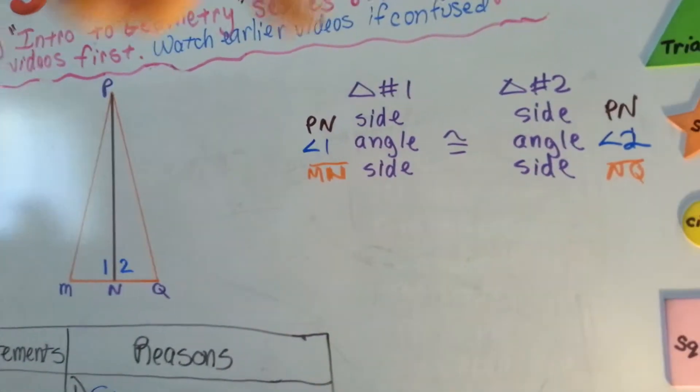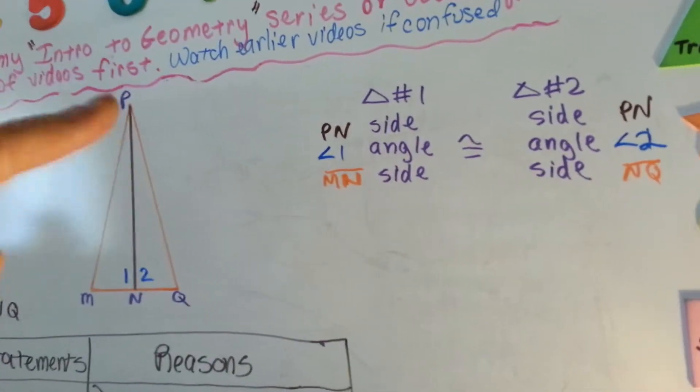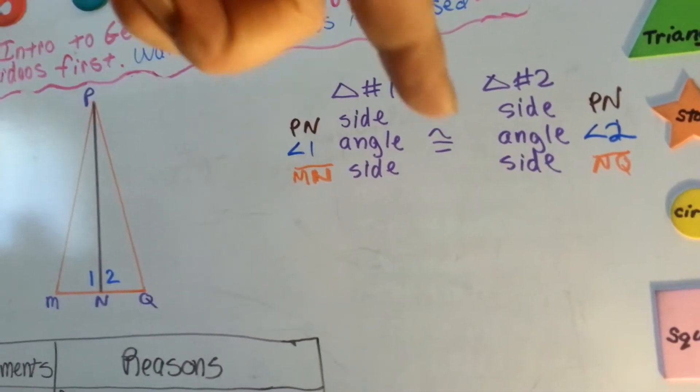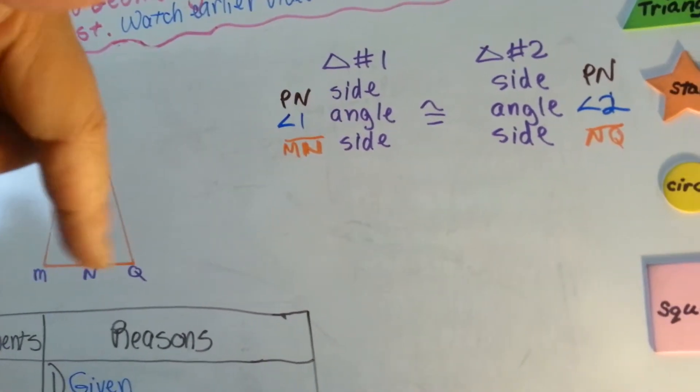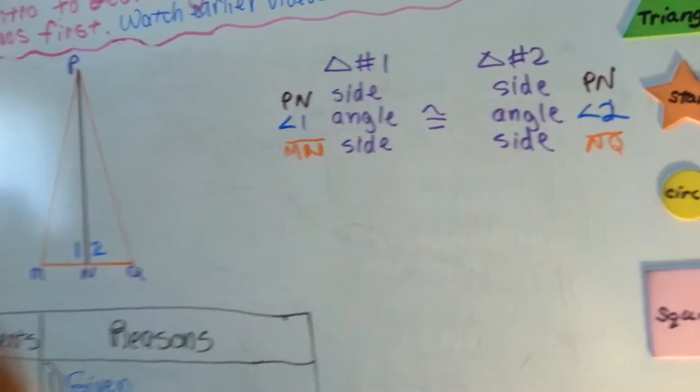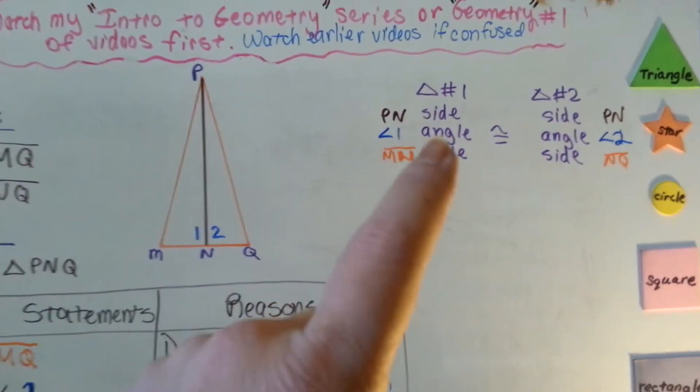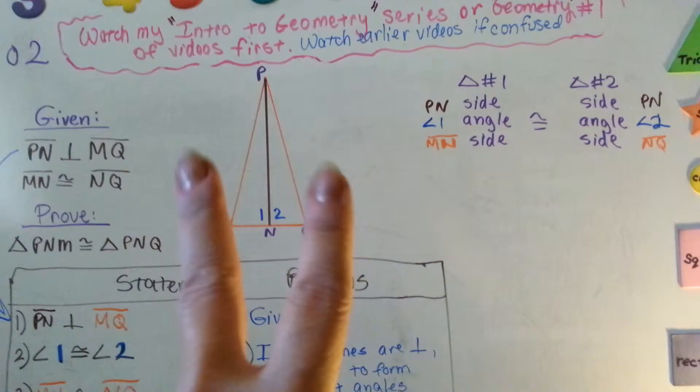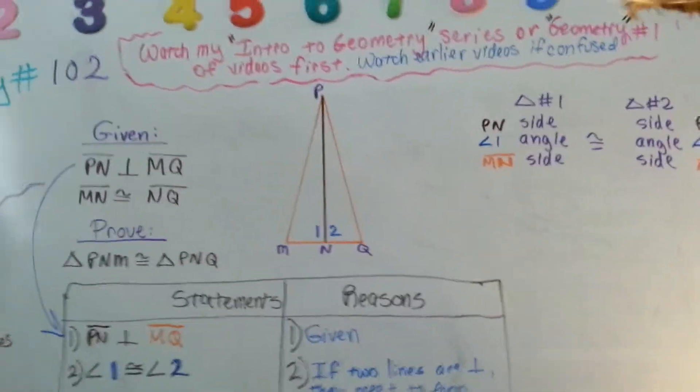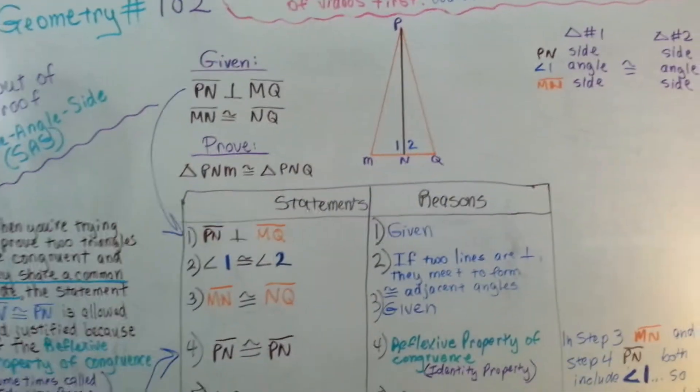Side angle side is congruent to side angle side. PN, this guy, is congruent to PN. Angle one is congruent to angle two. And MN is congruent to NQ. Side angle side. When side angles and side like that are both congruent, then it proves that the two triangles are congruent. So we did our prove and it worked.